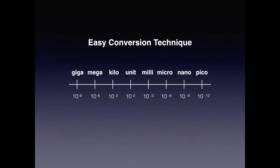I'm going to show you what I think is an easy way to convert from one unit to another, and there are several test questions that require you to do so. It requires knowing that a unit is 10 to the zero power, kilo is 10 to the third, mega is 10 to the sixth, giga is 10 to the ninth, milli is 10 to the negative third power, micro is 10 to the negative sixth power, nano is 10 to the negative ninth power, and pico is 10 to the negative 12th power.